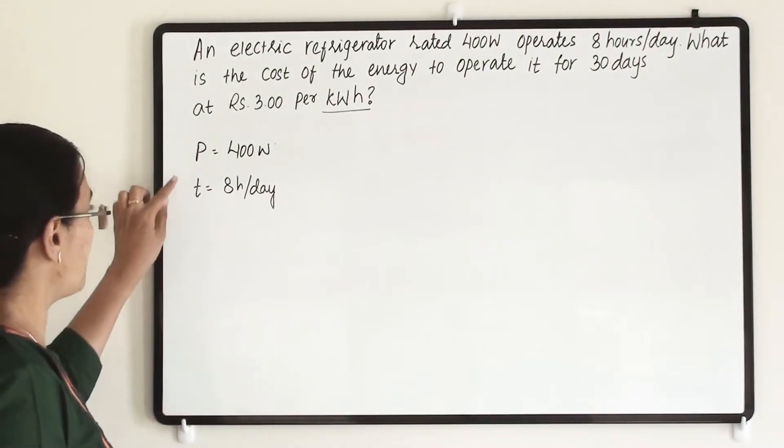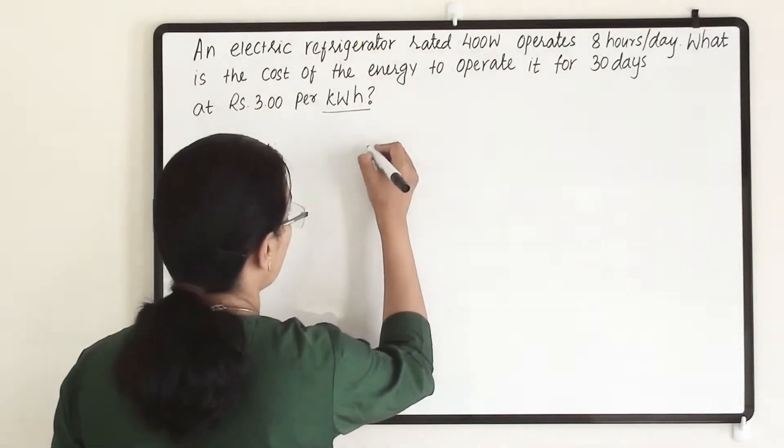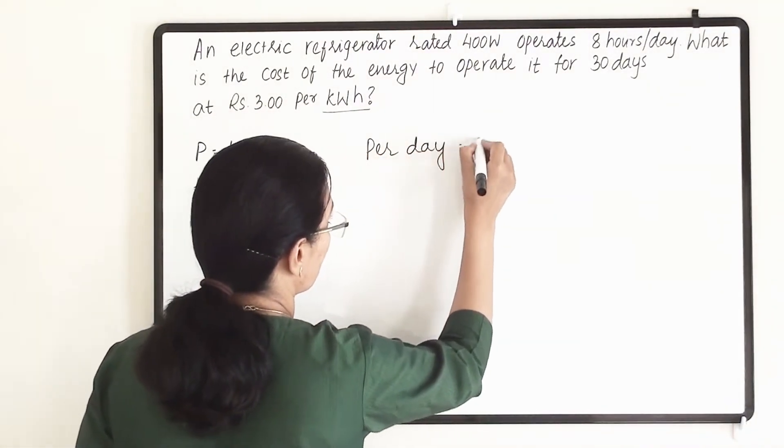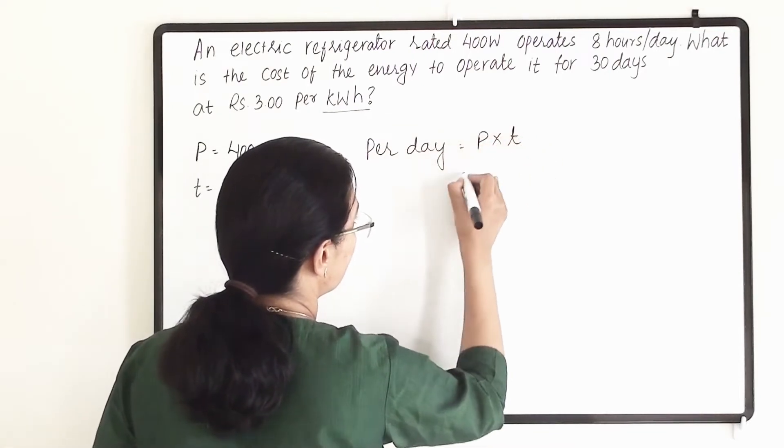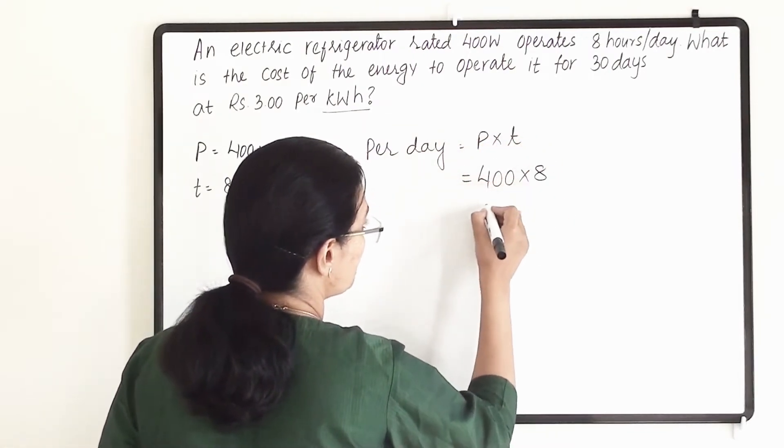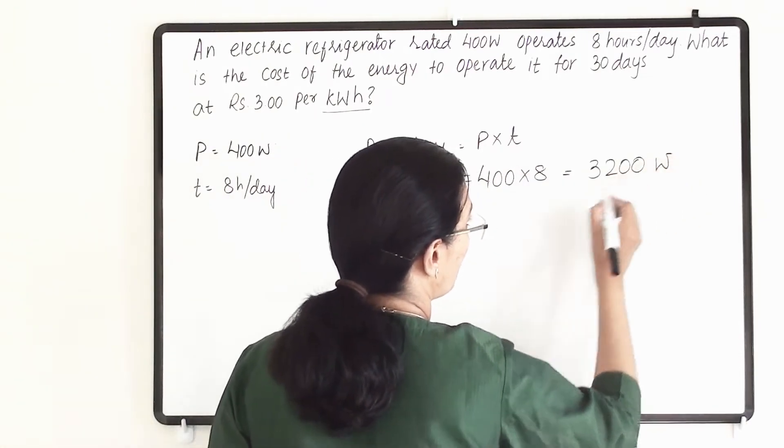So from this two, that is power and time, let us first find out the energy usage per day. So per day we are using P into T will give us 400 into 8. So it will give us 3200 watt hour.